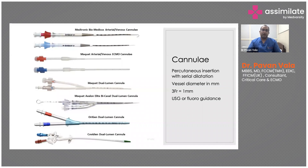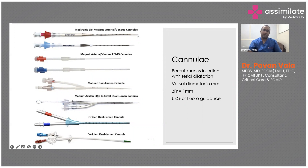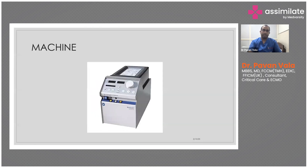These are some of the cannulas available on the market. You have Maquet cannulas, or you can use what's called an Avalon cannula. In VV-ECMO you can either have two cannulas in two different veins — femoro-jugular — or the Avalon, which is a single cannula with two different outlets placed in the right jugular, used for both drainage and return.